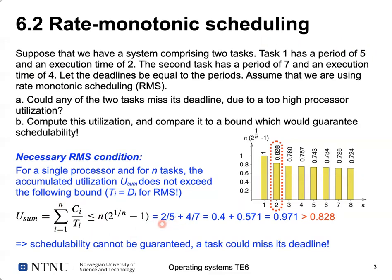The utilization is 2/5 + 4/7, which is approximately 0.4 + 0.571 = 0.971. Our utilization of 0.971 is definitely larger than 0.828, so schedulability with RMS cannot be guaranteed. This means a task could miss its deadline — it doesn't necessarily mean it will, but we cannot guarantee that no task ever misses its deadline.